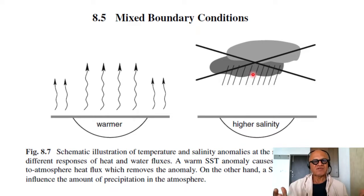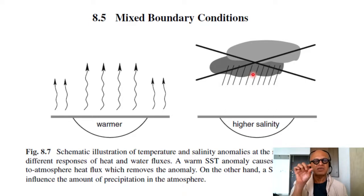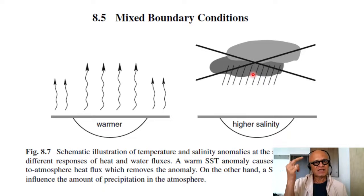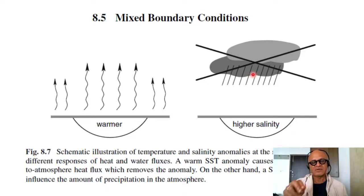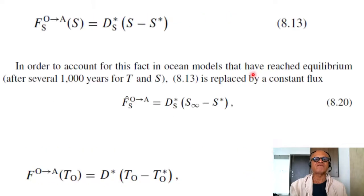There are indirect effects, of course. If you put rainfall on the ocean, it tends to stratify the ocean, make the mixed layer shallower, warm the atmosphere, and have a feedback. But that's more through the mixed layer structure temperature effect rather than a direct salinity effect. So this difference is always something that has to be dealt with.